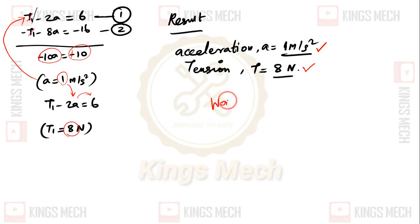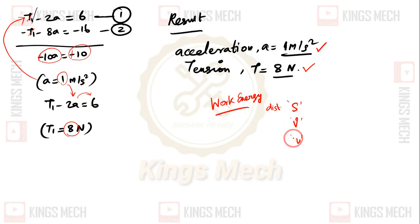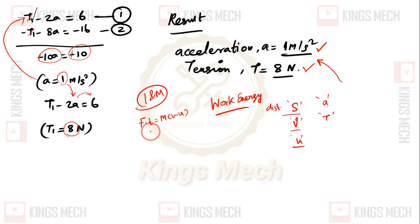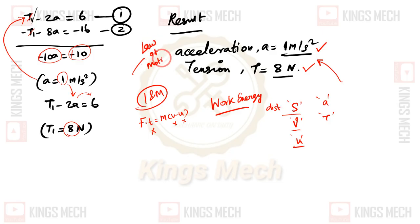The important point here is: this problem was labeled as a work energy problem, but for the work energy method you need a distance value and a velocity value (initial or final). Since those were not given and only acceleration and tension were asked, this is essentially a law of motion problem. Similarly, if we tried the impulse and momentum method, the formula is F times t equals m times (V minus U), but time t and initial velocity U were not provided. Therefore, the only applicable method here is the law of motion.